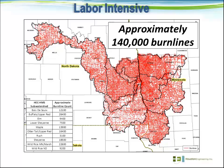Those 140,000 burn lines constitute a user sitting and determining whether or not a culvert exists at a given location and actually drawing a line in to represent the culvert so it can be accounted for during the processing to create the hydro DEM.